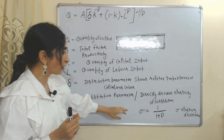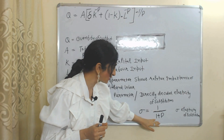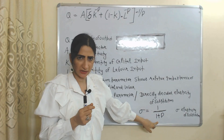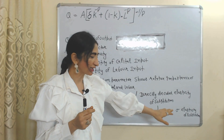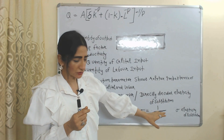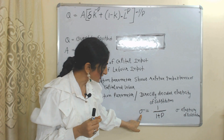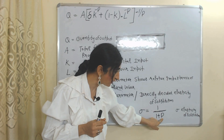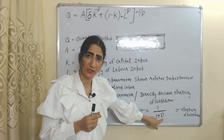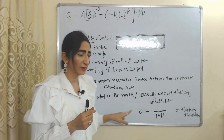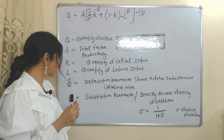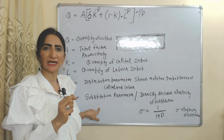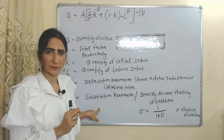The formula for calculating elasticity of substitution uses sigma (σ) to represent elasticity of substitution, and elasticity of substitution directly depends on the value of rho. So we can say rho is the substitution parameter which directly decides elasticity of substitution.